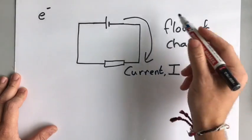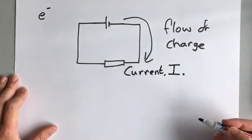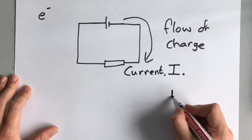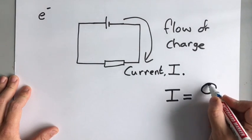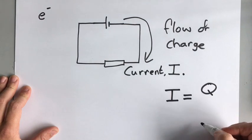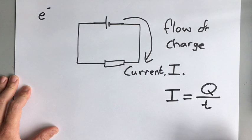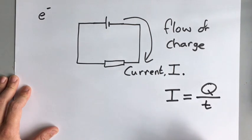Current is a measurement of how much charge is flowing in any amount of time. So the current is equal to the amount of charge — remember, that's measured in coulombs — divided by the amount of time that it takes. So current is charge divided by time.